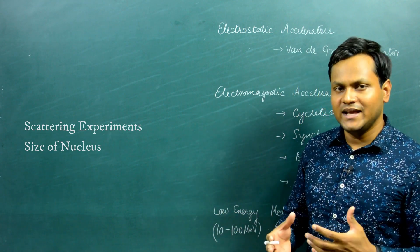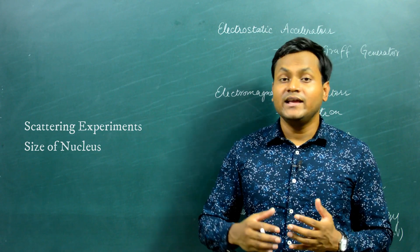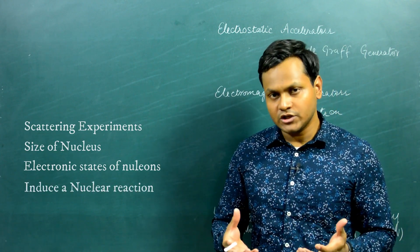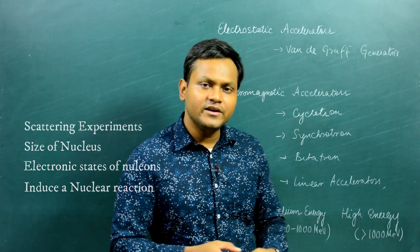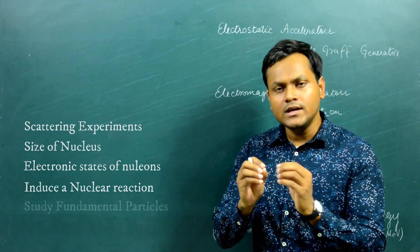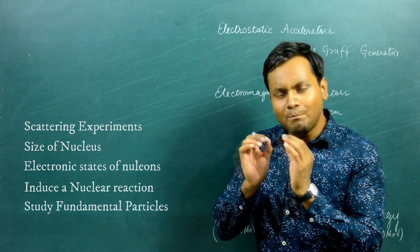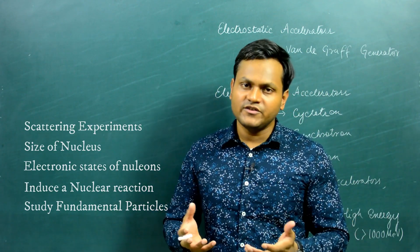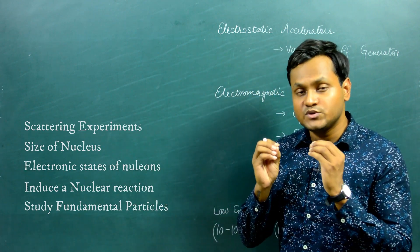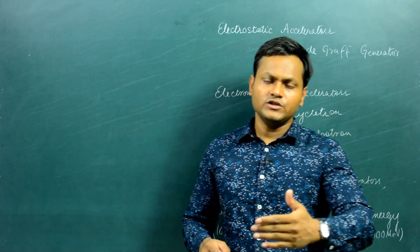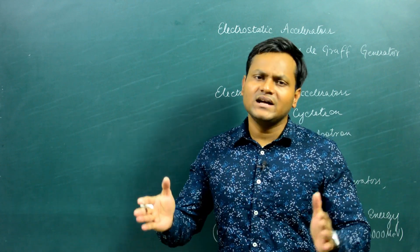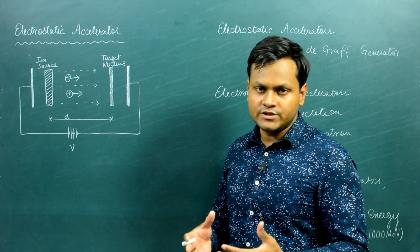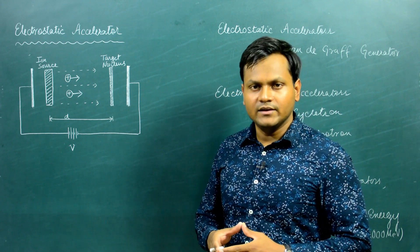Scattering experiments give us a lot of information about the size of a nucleus and how nuclear size varies with mass number, and these are typically performed using low energy accelerators. You can also use accelerators to understand the electronic states of particles inside the nucleus, to break apart a nucleus or induce nuclear reactions, and — especially with high energy accelerators — to break apart a nucleus into its constituent fundamental particles, so that you can study the fundamental particles which make up matter. Depending upon the requirement, different kinds of accelerators help us gather different kinds of information. In the next couple of videos I'll talk about all of these different kinds of accelerators.